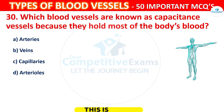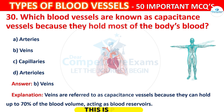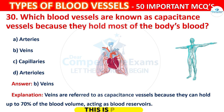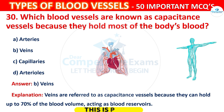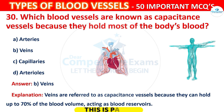The correct answer is B, that is Veins. Veins are referred to as capacitance vessels because they can hold up to 70% of the blood volume, acting as blood reservoirs.